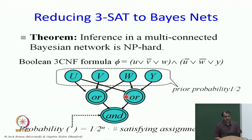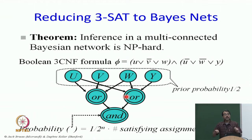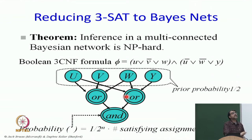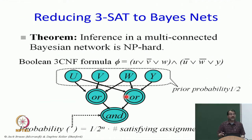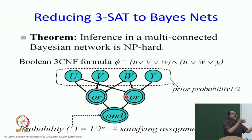Let us say I give you a CNF formula: u or not v or w, and not u or not w or y. I want to create a Bayes net which solves the SAT problem — that is, to figure out if the formula is satisfiable or not. Can we create a Bayes net and do inference so that the answer gives me the answer to the satisfiability problem?